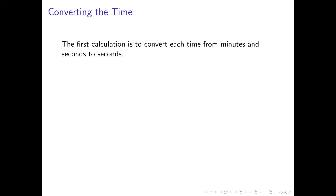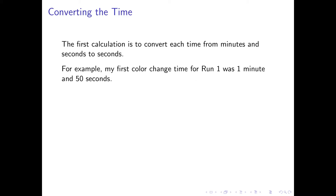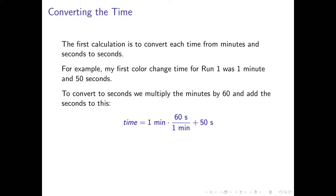The first calculation is to convert each time from minutes and seconds to just seconds. For example, my first color change time for run 1 was 1 minute and 50 seconds. To convert this to seconds, we multiply the minutes by 60 and add the number of seconds. So the total time is 1 minute times 60 seconds per minute plus 50 seconds, which gives 60 plus 50, or 110 seconds.